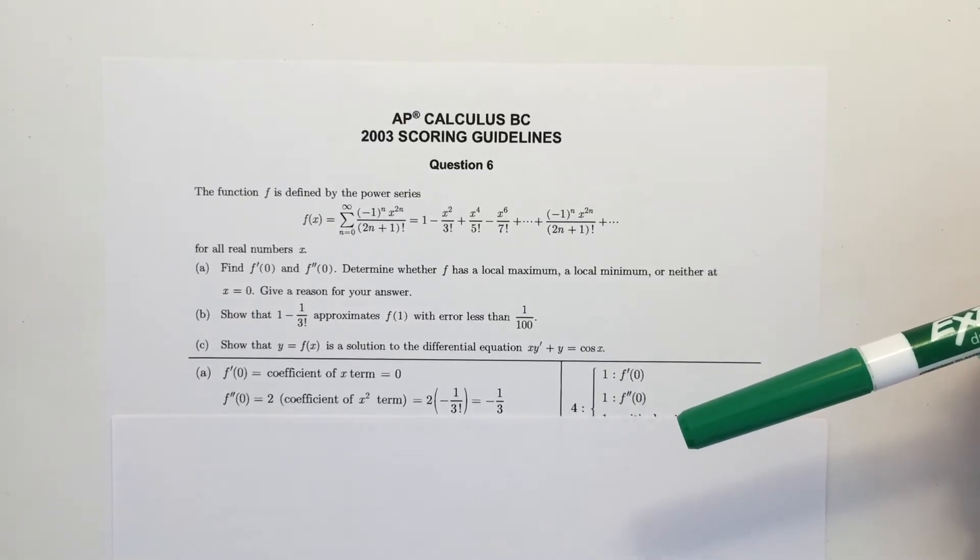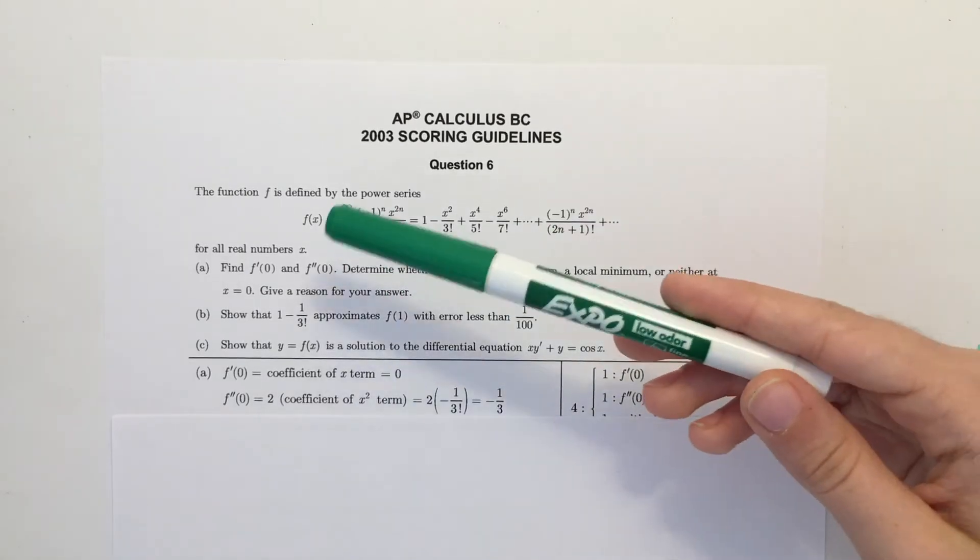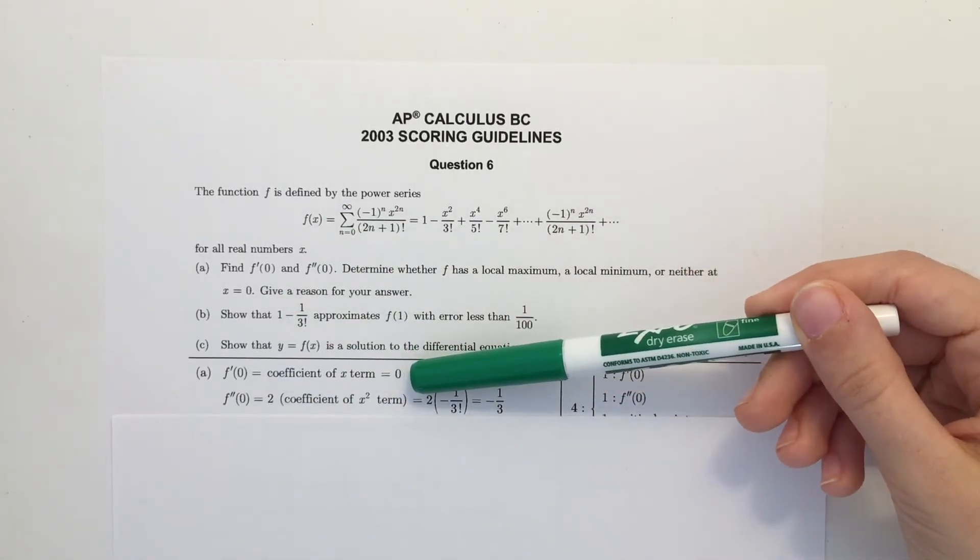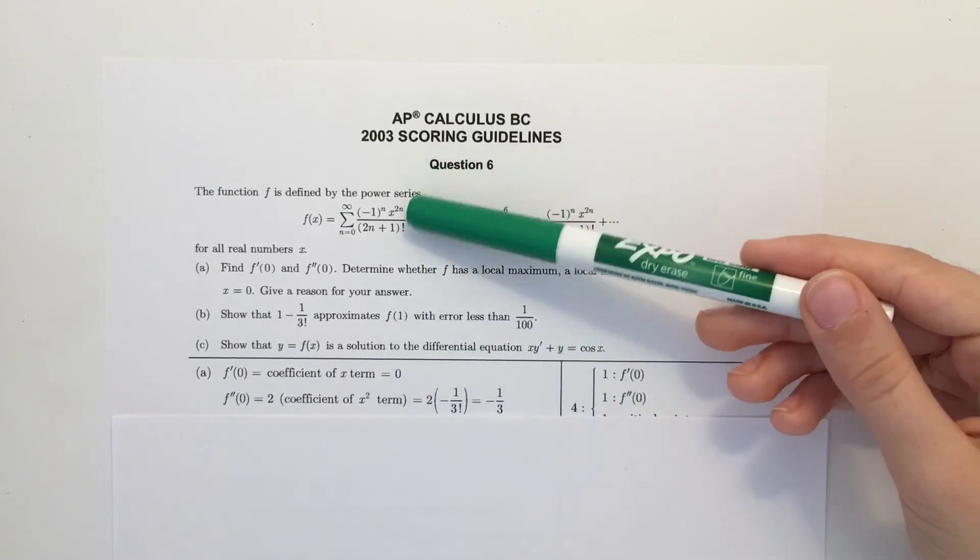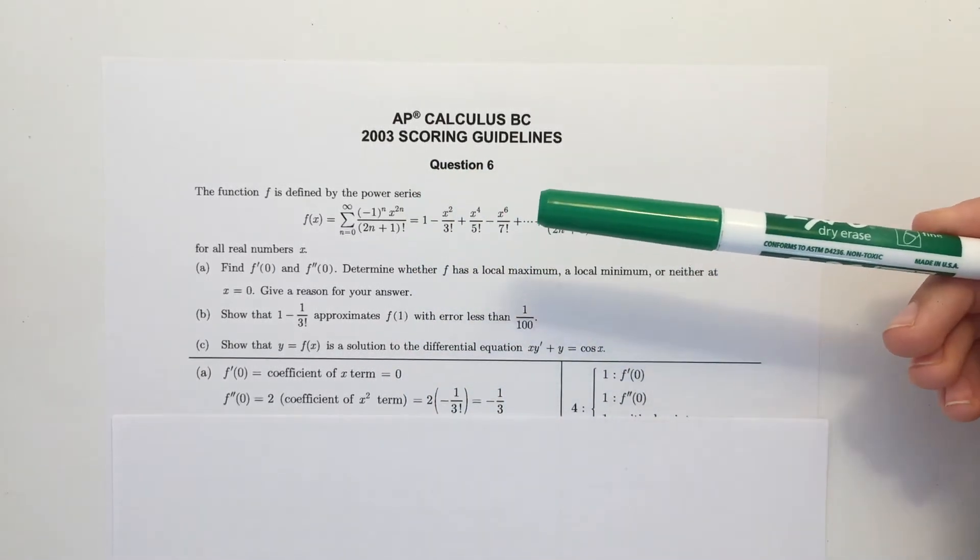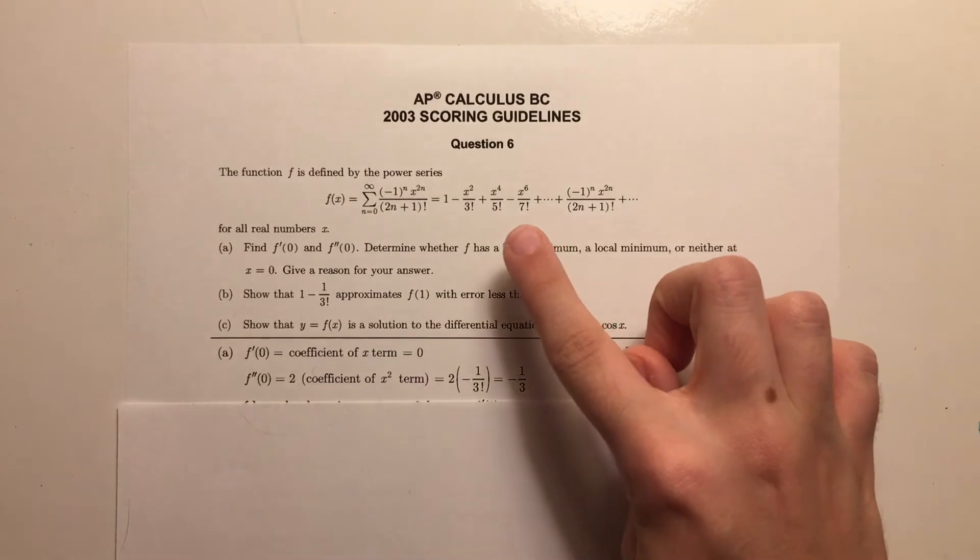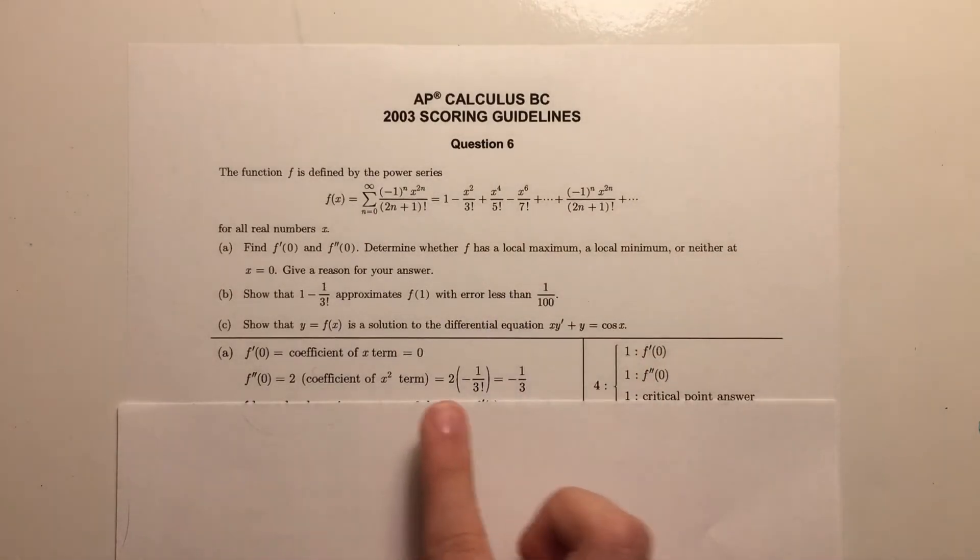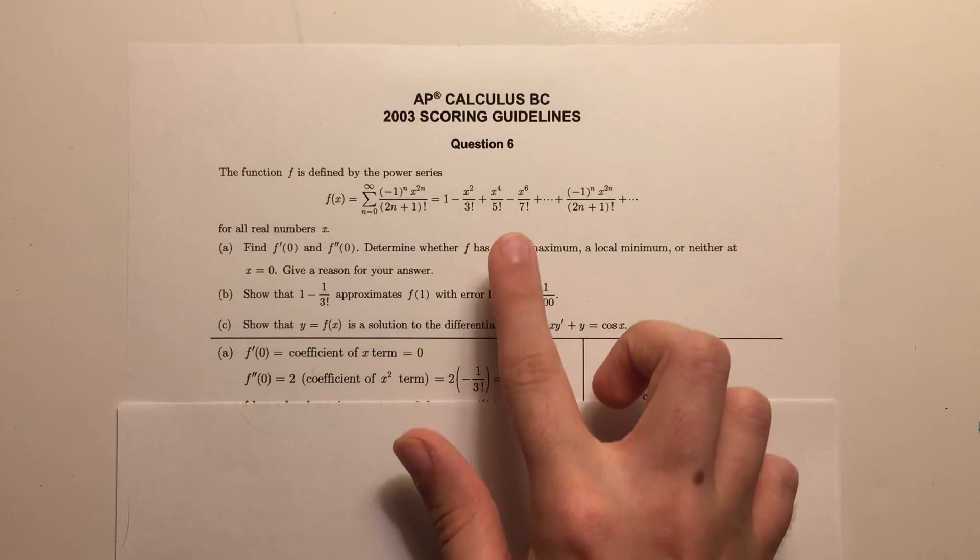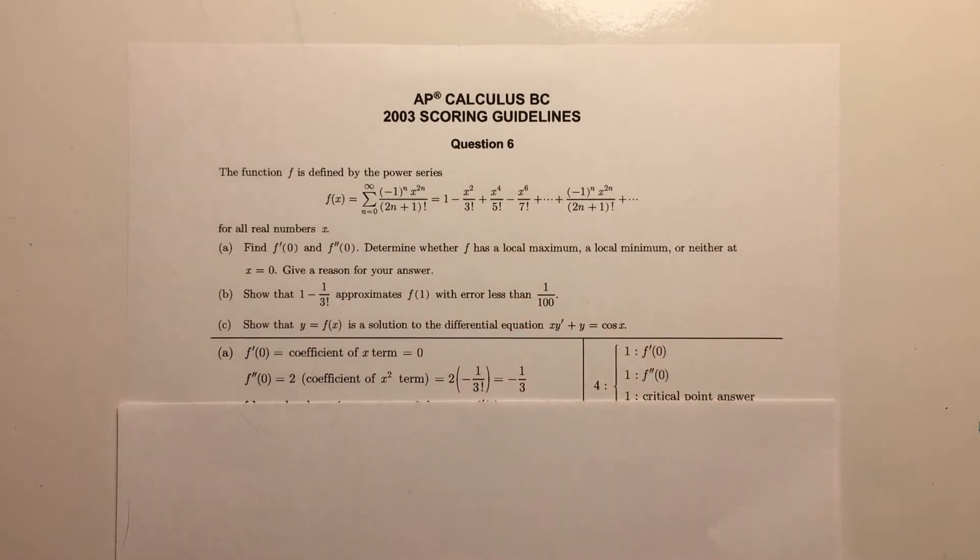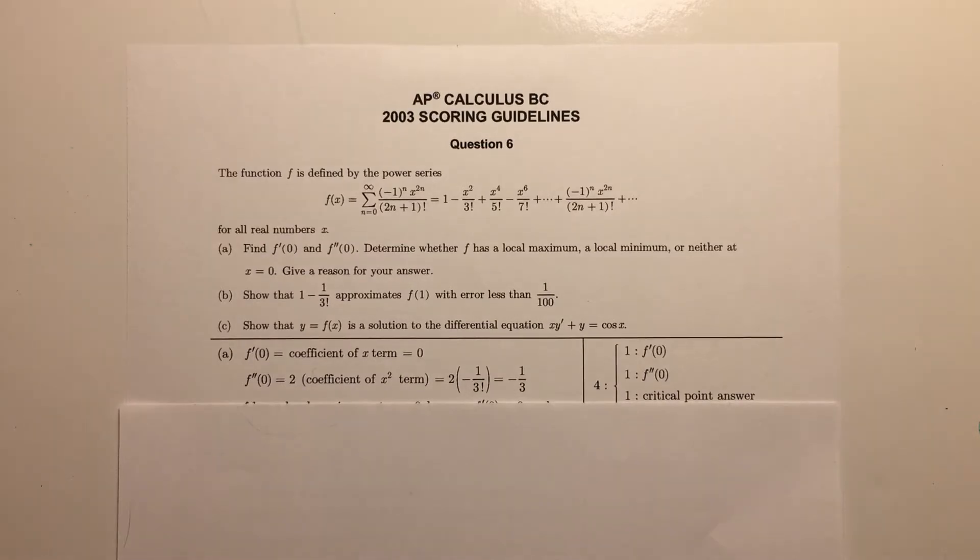The answer key does not go into this much detail. All it states is that f prime of 0 is equal to the coefficient of the x term, which is equal to 0. And as you can see, there is no x term, so it is equal to 0. And then the second derivative at 0 is equal to 2, which is from the derivative of x squared times the coefficient of the x term, which is negative 1 over 3 factorial. And you also get negative 1 third, which is what I got doing the other method. Just remember that there are multiple ways of doing these problems, and that recognizing patterns does help to make it faster.